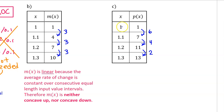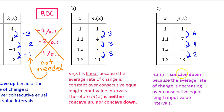For part c, we once again have the same input values. But we notice that the change in output is decreasing over these equal length input value intervals. Therefore, the rate of change is decreasing. m of x is concave down because the average rate of change is decreasing over consecutive equal length input value intervals.